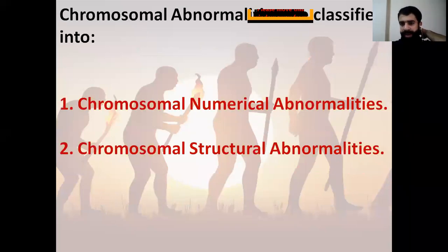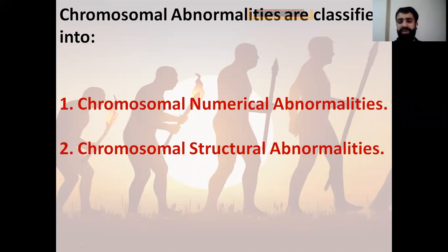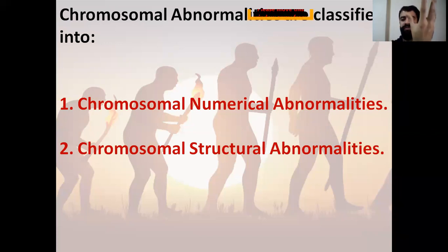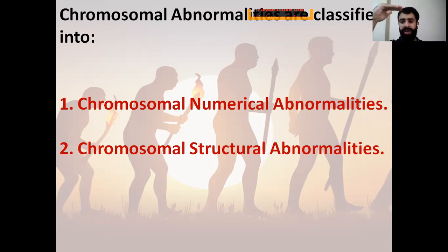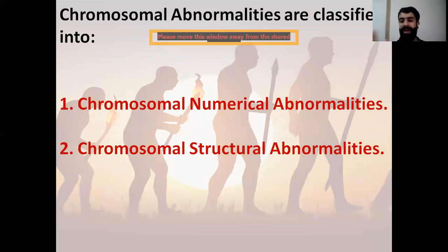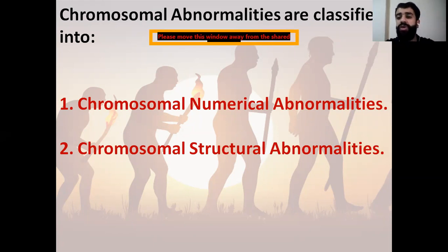First of all, you have to know chromosomal abnormalities — abnormalities at the level of the chromosomes. These abnormalities are classified as either chromosomal numerical abnormalities or chromosomal structural abnormalities. A chromosomal numerical abnormality is an abnormality in the number of chromosomes — maybe higher than normal or lower than normal. A chromosomal structural abnormality is an abnormality at the level of the structure of the chromosome.